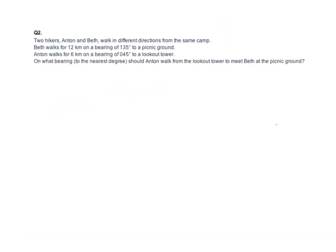Two hikers Anton and Beth walk in different directions from the same camp. Always start with a compass drawn on the camp. Beth walks 12 kilometers on a bearing of 135 degrees — that's out at 135 — and we mark where Beth ends up, drawing a little compass there, noting 135 degrees means 45 degrees from the east line.